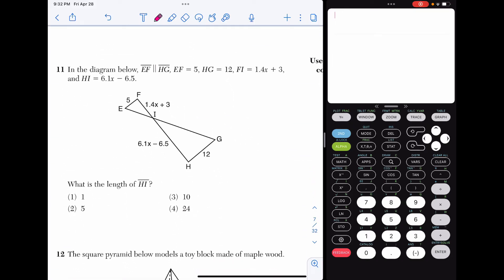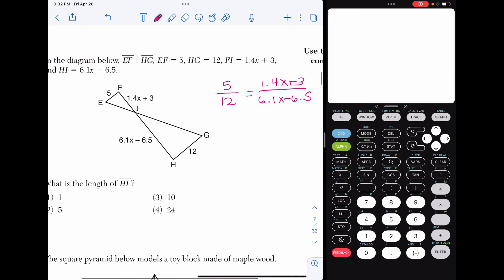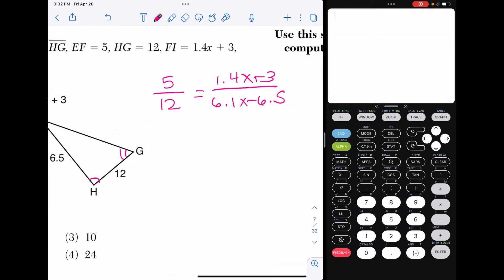In 11, we have a diagram where EF and HG are parallel. We are given a whole bunch of side lengths here, and we want to find the length of HI. So when we have this here, we are going to set up a proportion. So five and 12 correspond. And then 1.4X plus three and 6.1X minus 6.5 correspond. The reason we can set up a proportion here is because we have similar triangles. We know that because of the parallel lines that makes the alternate interior angles congruent and the triangles similar by angle-angle.